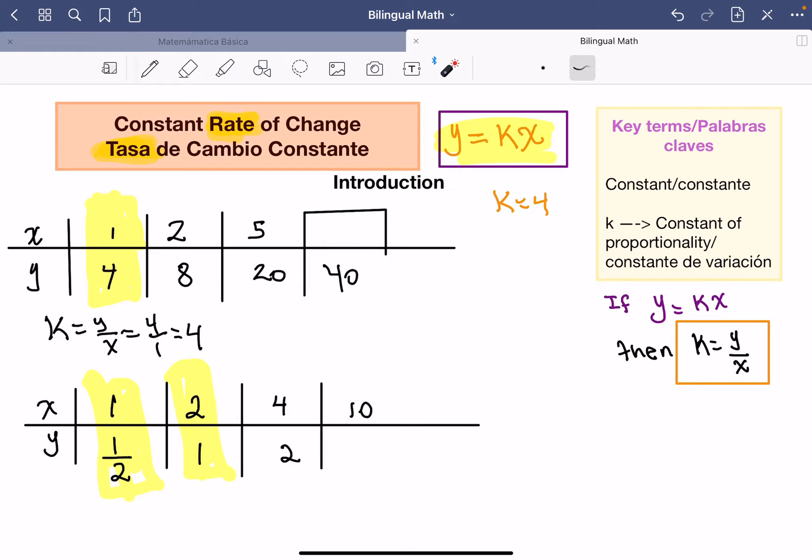So how you're going to do that, if you know y, y is equal four times x, four times x. You already know y is 40. So y is 40. 40 equals four times what number?